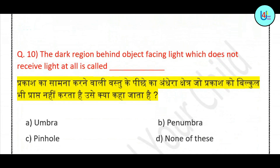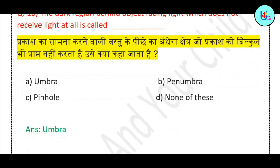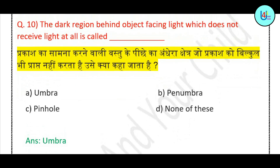Question number 10: The dark region behind an object facing light, which does not receive light at all, is called — umbra, penumbra, pinhole, or none of these? Correct answer is: umbra.